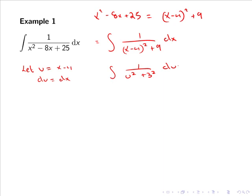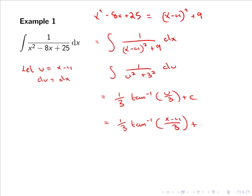We now have an integral of the form 1 over u squared plus a squared. Hence this integrates to give 1 over a, so 1 over 3 times tan inverse of u over 3 plus c. Replacing u, our final answer is 1 over 3 times tan inverse of x minus 4 over 3 plus c.